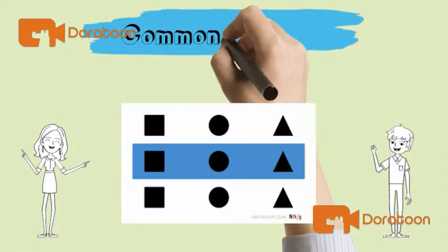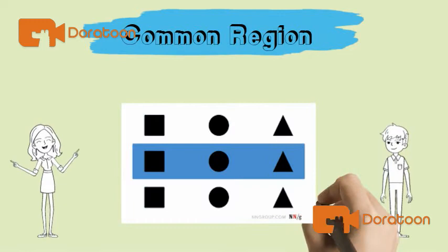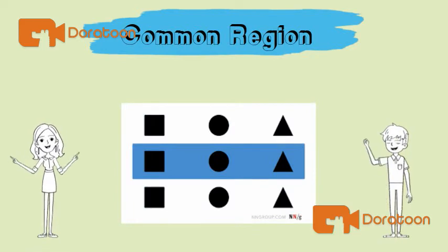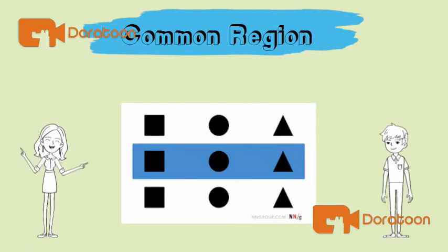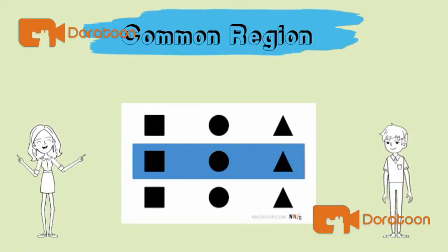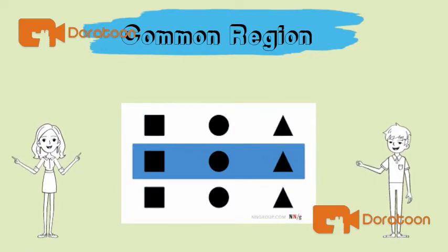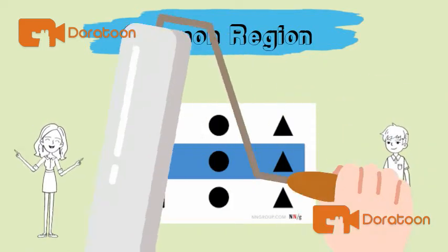Common region. This Gestalt psychology principle states that we tend to group objects together if they are located in the same bounded area.